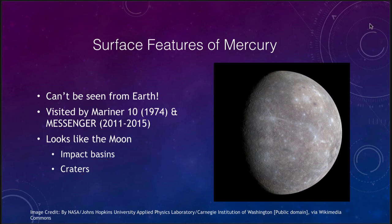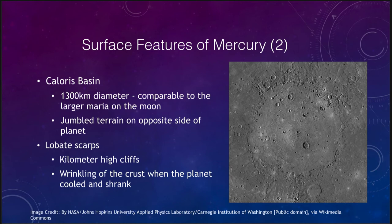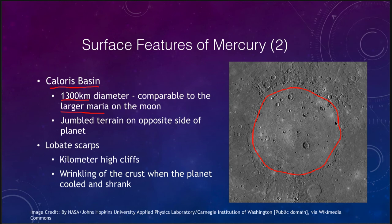Looking in more detail at the surface features from MESSENGER images, we see a very large basin called the Caloris Basin, which is 1,300 kilometers in diameter — comparable to the larger Maria on the Moon. However, it has not been flooded by the lava flows that occurred on the Moon; it still has a decent number of craters around and inside it. So while large impacts did occur on Mercury, we do not see any of the Maria like we see on the Moon.